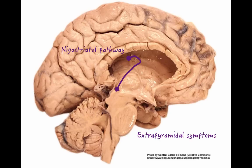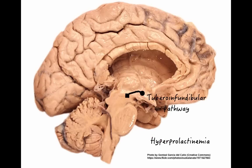But when D2 blockade happens in the nigrostriatal pathway, it would lead to extrapyramidal symptoms such as tremor, bradykinesia, and rigidity. There are other motor effects as well, such as dystonia, akathisia, and tardive dyskinesia. When antipsychotics block D2 receptors in the tuberoinfundibular pathway, dopamine is not able to inhibit prolactin release, which leads to hyperprolactinemia, amenorrhea, and sexual dysfunction.